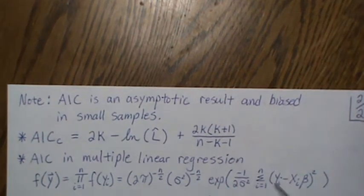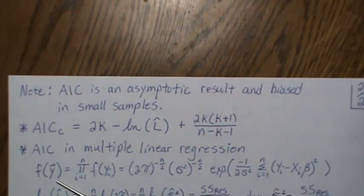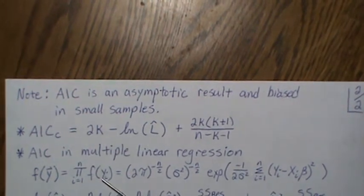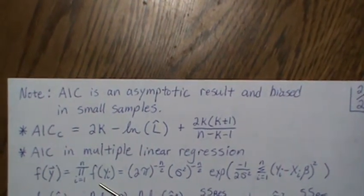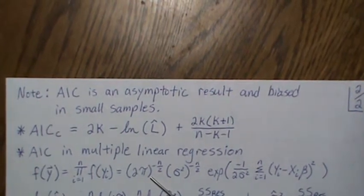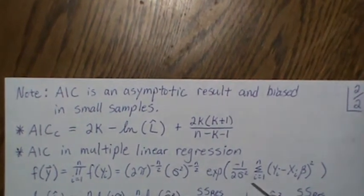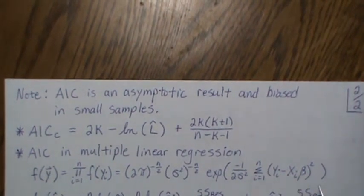Let's look at it specifically in the multiple linear regression setting. F(Y) can be thought of as—each of these Y's are independent, so this joint distribution is actually the product of the marginals. Since it's multivariate normal, this is the distribution, and notice we're using the candidate models here.